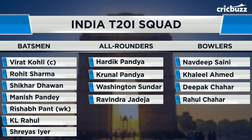Hardik's at six, so then it's Krunal at seven. I'm trying to figure out which I want from Jadeja or Sundar because I'm thinking of South Africa's team. Up at the top for South Africa is De Kock, so you might want a spinner — a sort of off-spinner. Because Jadeja and Krunal are similar bowlers, you don't want to have two of them.